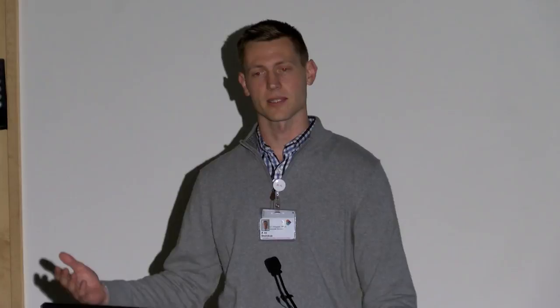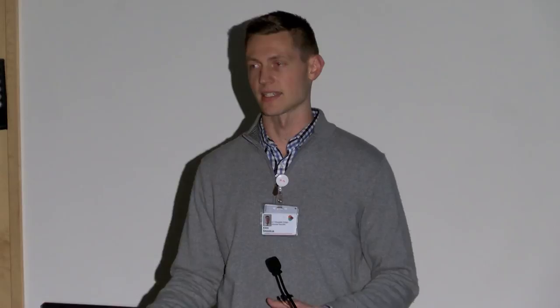OTS stands for off-the-shelf. It's not simply grabbing a size large left — there is clinical expertise involved, but it does mean we order it from the manufacturer and can fit it as-is with minimal trimming, aligning, and padding. Custom bracing, by contrast, involves taking measurements and a fiberglass cast, pouring plaster, stripping it, modifying it, pulling thermoplastic over it, adding pads and riveting straps — it takes time and is where our area of expertise really comes into play. Custom bracing is indicated for deformities where an off-the-shelf brace can't accommodate, for example, a bowed femur.